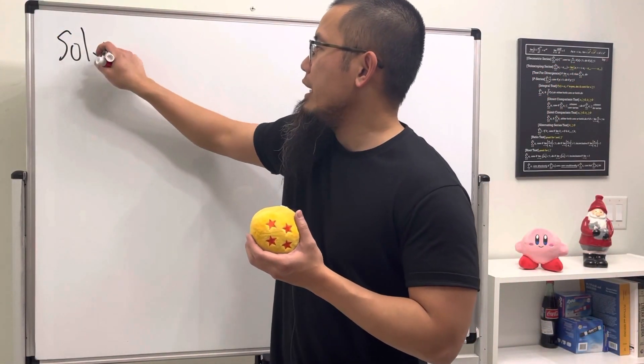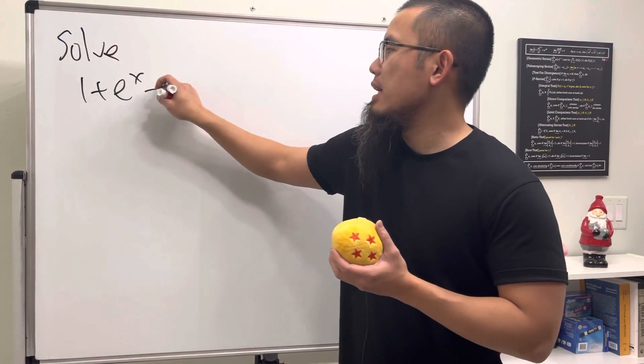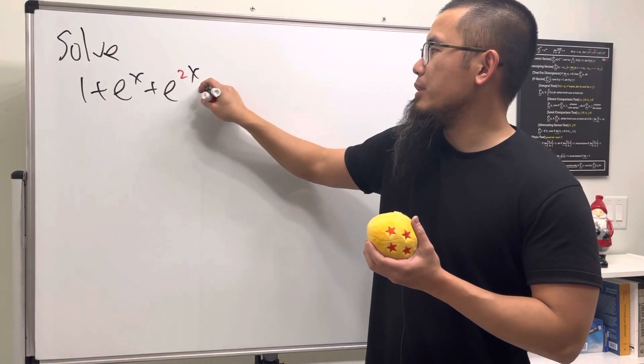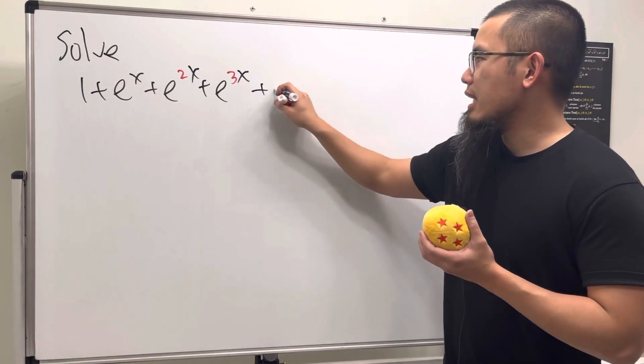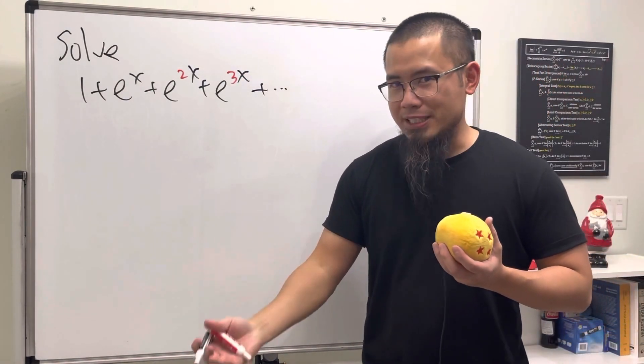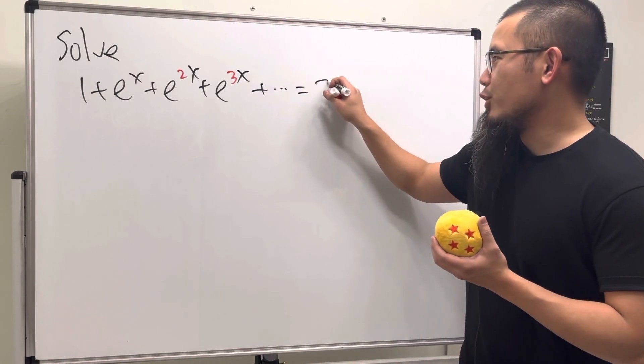So I put this question on my pre-calculus test. Check this out, we are going to solve this equation. We have 1 plus e to the x plus e to the 2x and then plus e to the 3x, and you think we are done, we are not. We are going to add dot dot dot. Yes, this is the infinite exponential equation and this right here is just going to be equal to 2.